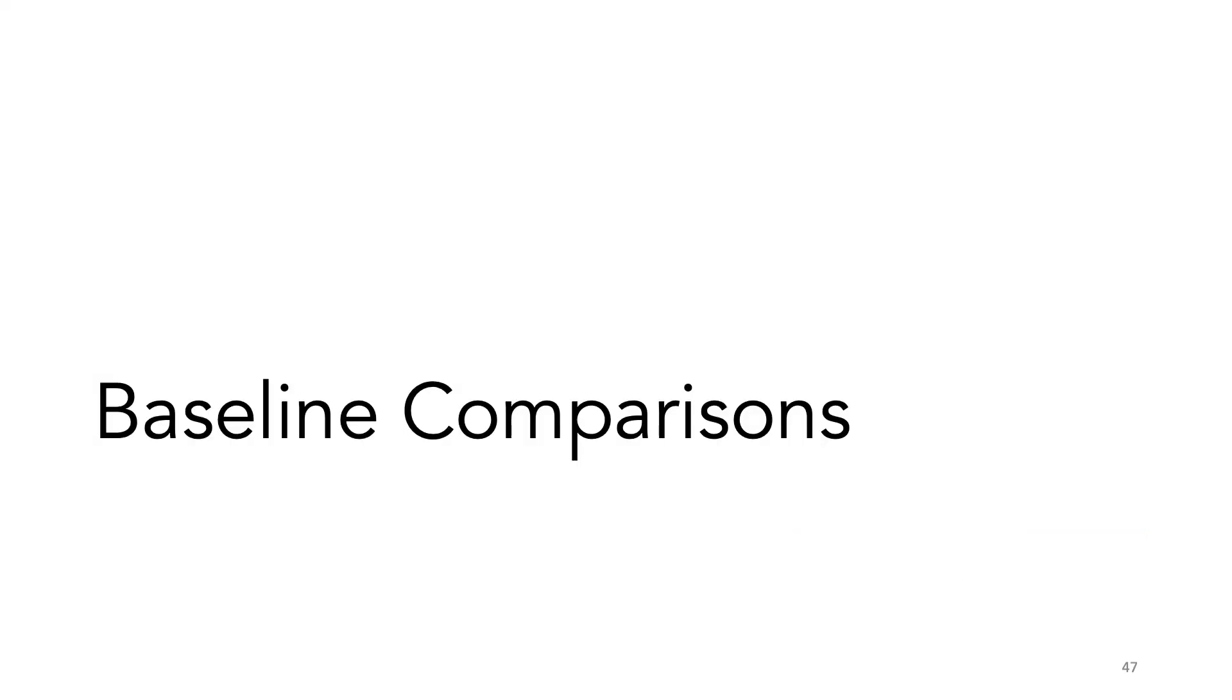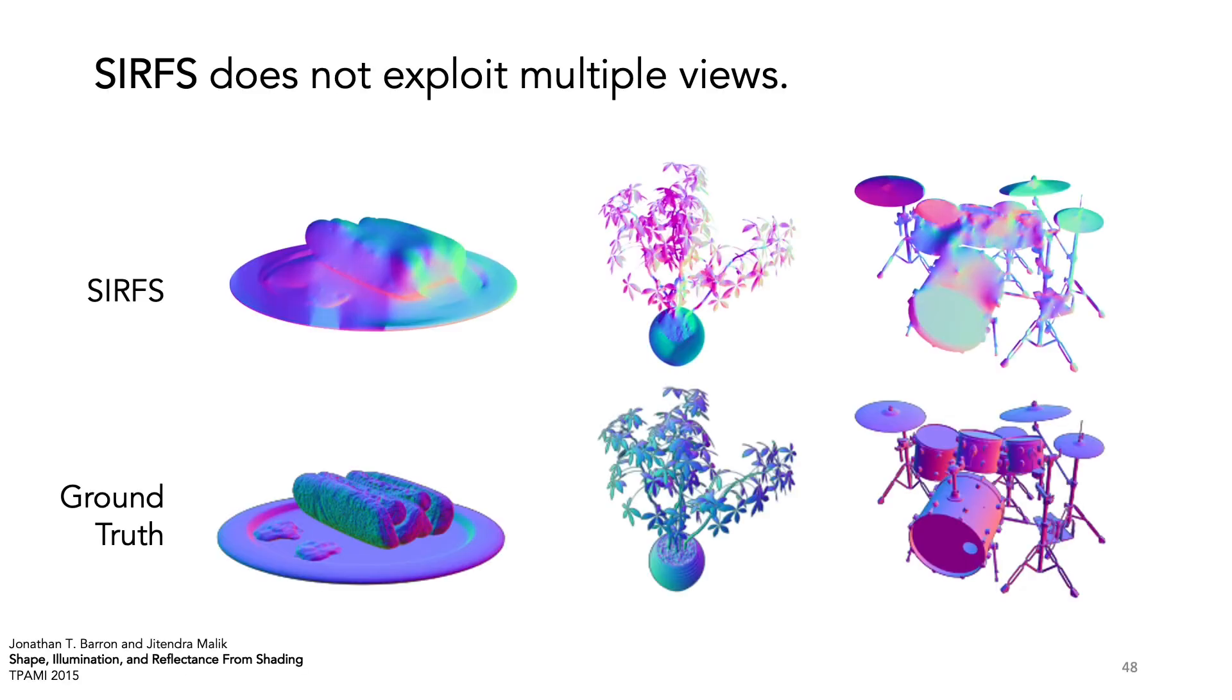Some comparisons with other methods. SfSNet is a single view classic method that doesn't exploit multiple views, so its normals are less accurate.